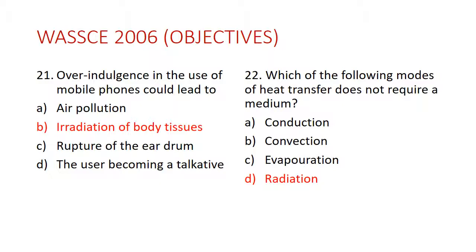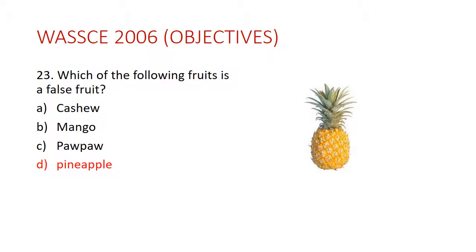So conduction and convection both need a medium, but radiation needs no medium — it travels through a vacuum or an empty space. So the answer is D. Question 23: Which of the following foods is a false fruit? The answer is D — pineapple. Pineapple is a false fruit because it is formed from other parts of the flower.